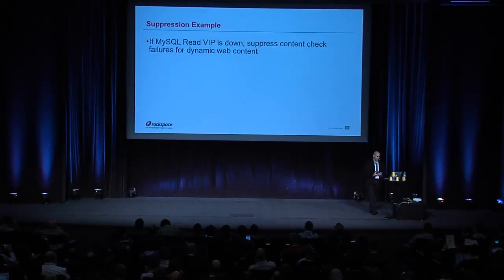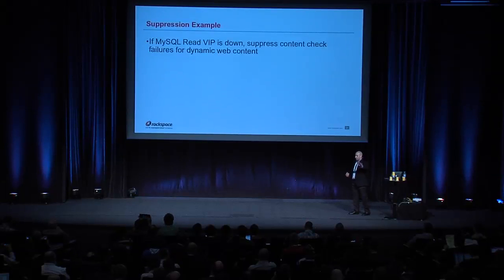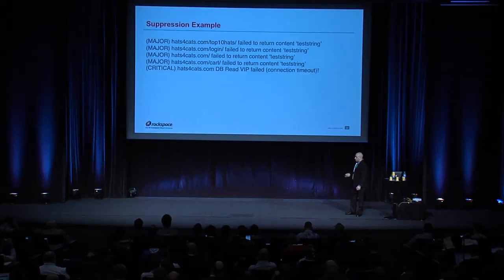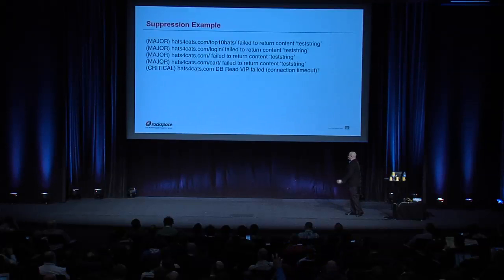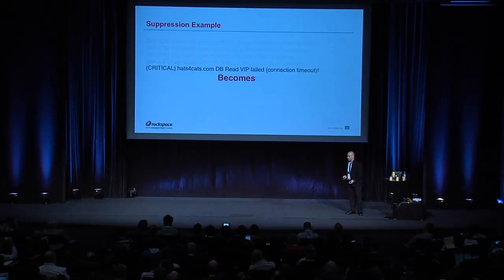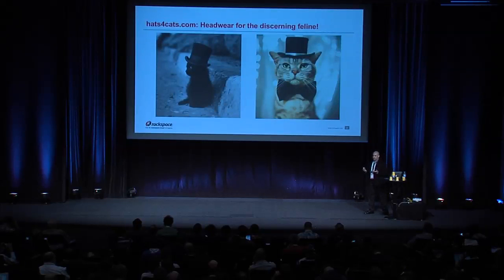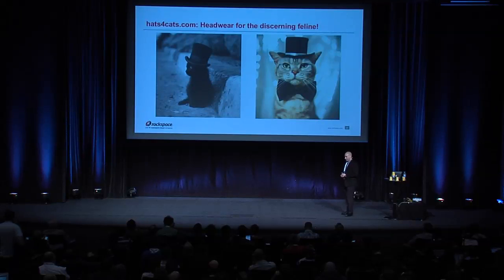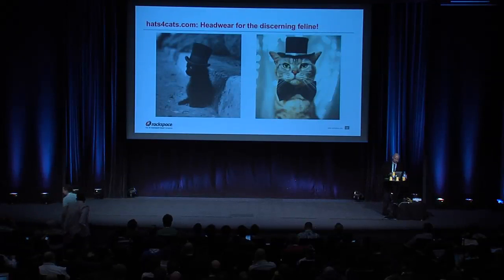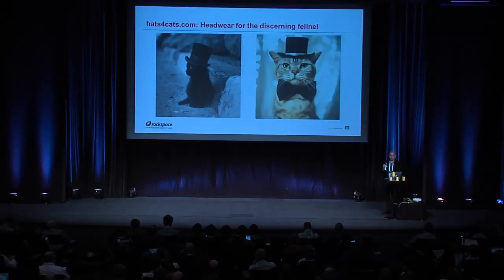An example of suppression: if MySQL read VIP is down, you know all your dynamic content health checks for your web services are going to fail because they can't access the database to generate dynamic content. Rather than seeing alerts that your top 10 hats page is down, your login page is down, and so on, in addition to the read VIP being down, you suppress those and just see where the problem is actually occurring. The goal is ensuring that our end users have access to quality service — applying these principles achieves that.